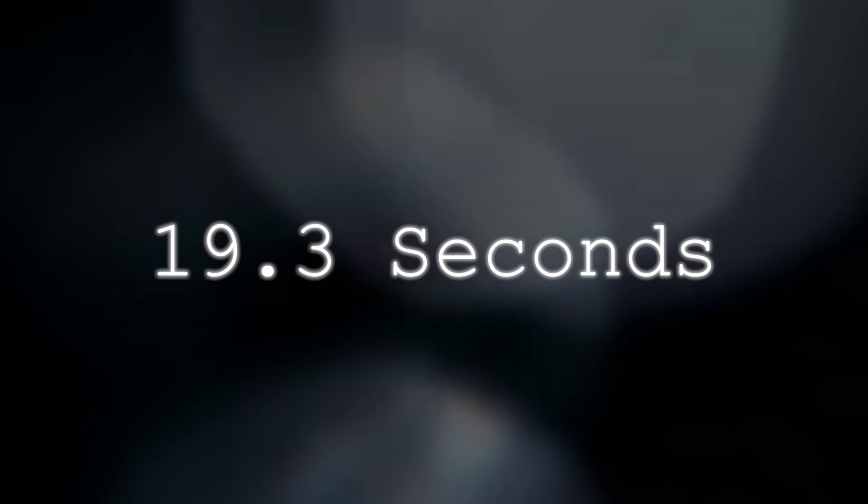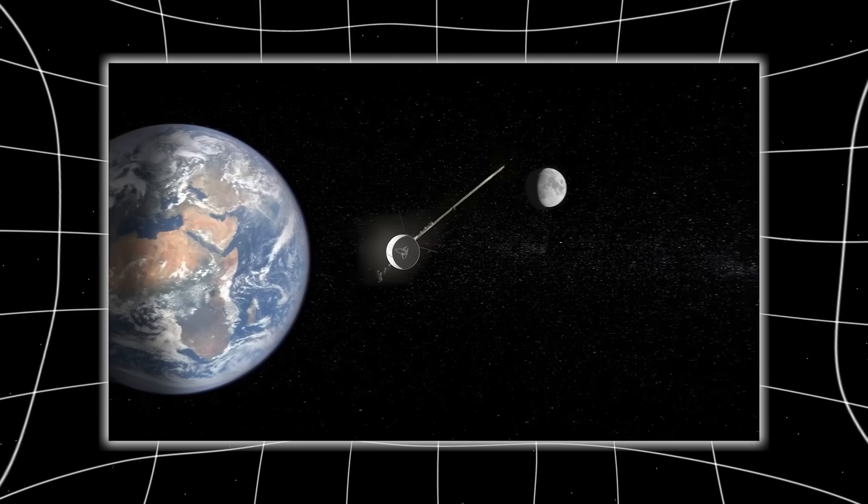A wave structure, repeating every 19.3 seconds, formed what could only be described as a waveform with intentional curvature, like a sine wave drawn by hand, layered with complex harmonics.